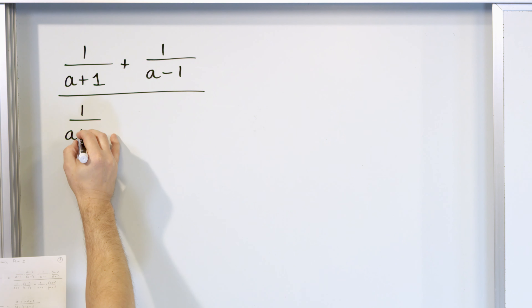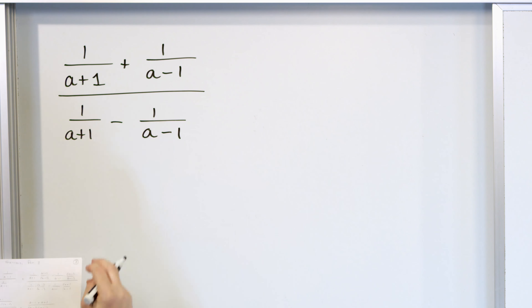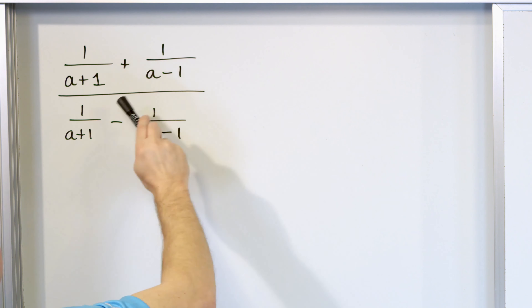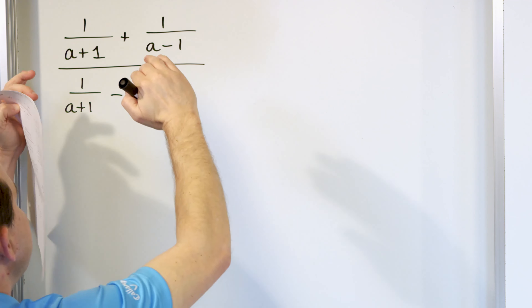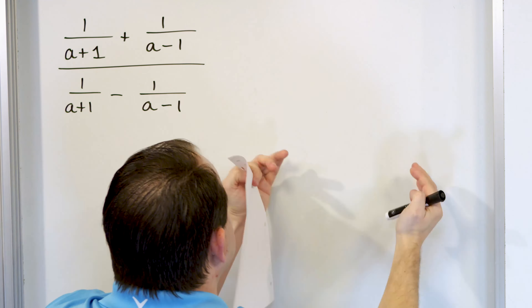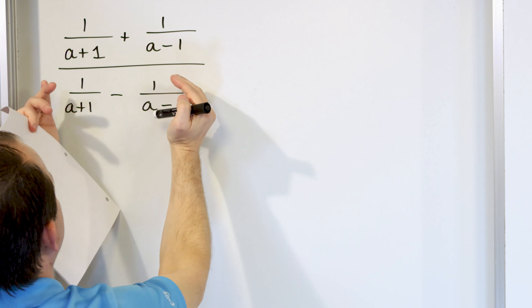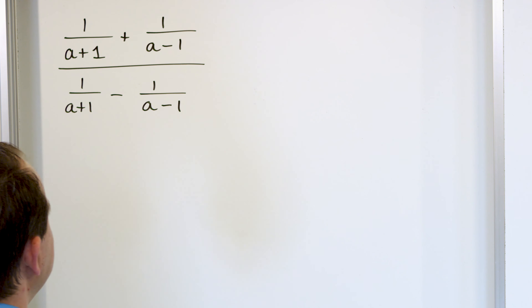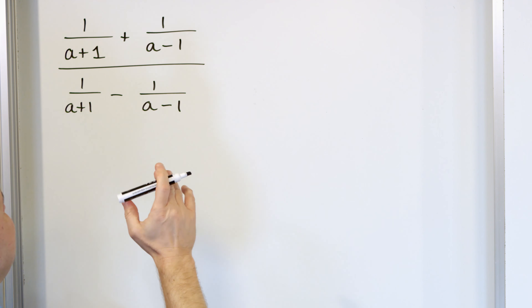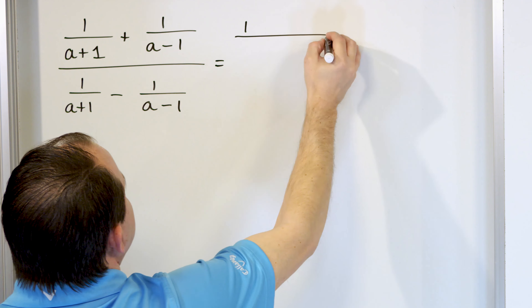What if you have 1 over (a+1) plus 1 over (a-1) in the numerator, and the denominator is 1 over (a+1) minus 1 over (a-1)? A lot of students will look at this and say they'll just cancel the 1 over (a+1) terms, but you can't do that. You cannot cancel things on the top and bottom unless you have factored forms — everything multiplied. The plus and minus totally prevent you from doing that because it links terms together, and these two terms are different so you can't cancel.